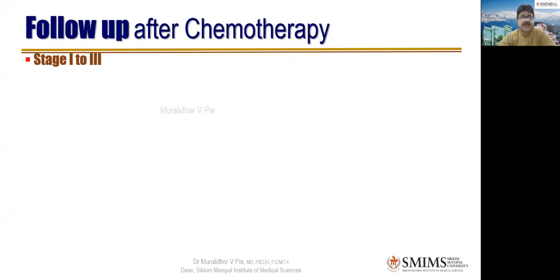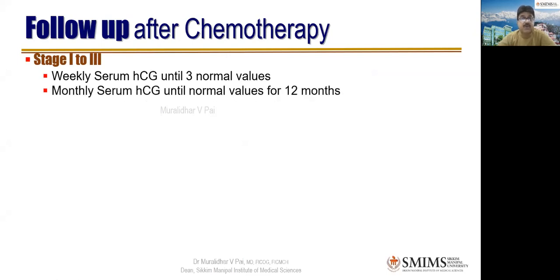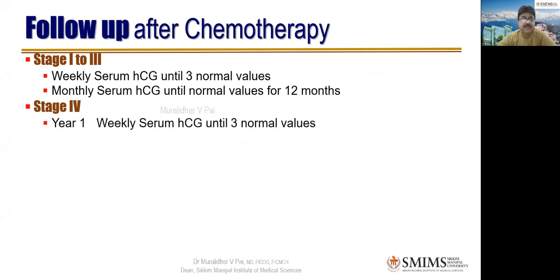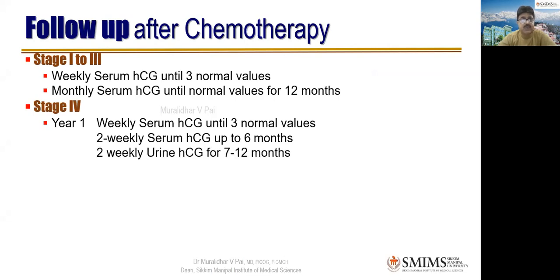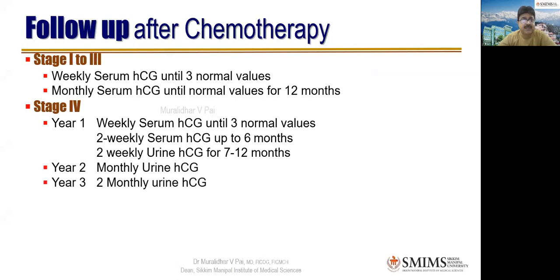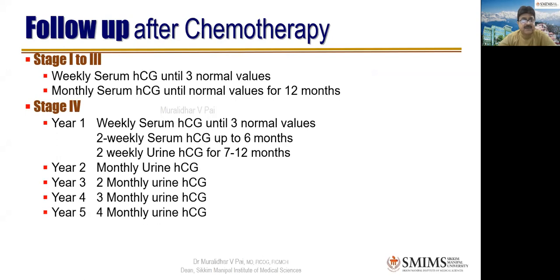Follow-up after chemotherapy: For Stage I–III, weekly serum beta-hCG until three consecutive normal values, then monthly for 12 months. For Stage IV, first year: weekly until three months, then two-weekly up to six months, then two-weekly urine hCG up to twelve months. Second year: monthly; third year: two-monthly; fourth year: three-monthly; fifth year: four-monthly; sixth year onwards: six-monthly — essentially lifelong monitoring, done more frequently early on.